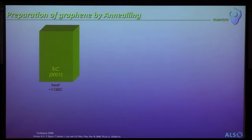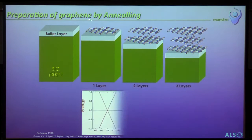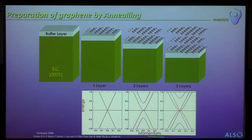How do we make samples? One popular recipe is to just start with silicon carbide. If you heat up these crystals, you're going to evolve silicon out of them and leave a carbon-rich surface at the top. The first layer you grow is electronically very boring. It's coupled very strongly to the substrate and does not have the electronic properties of graphene as a result. But if you keep annealing in steps, you can grow multiple layers of graphene. And it's very easy to know what you've grown by measuring the band structure itself.